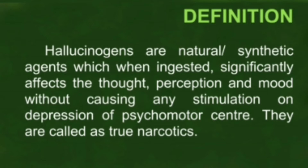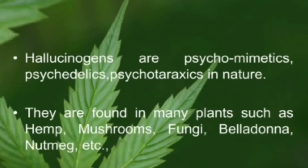All hallucinogens are called true narcotics — morphine, codeine, codeine, heroin, and methadone are some examples of true narcotics. In this case, we also call hallucinogens by the technical terms psychomimetics, psychedelics, and psychotomimetics.